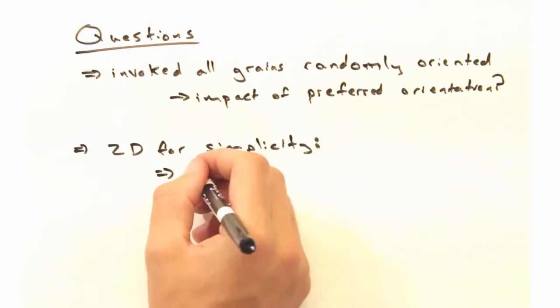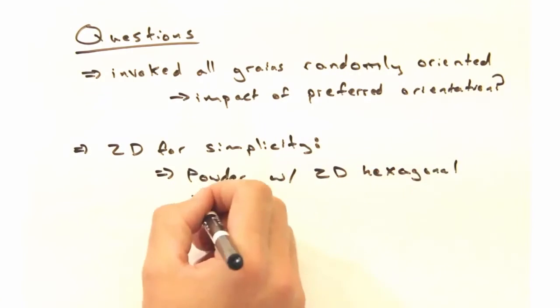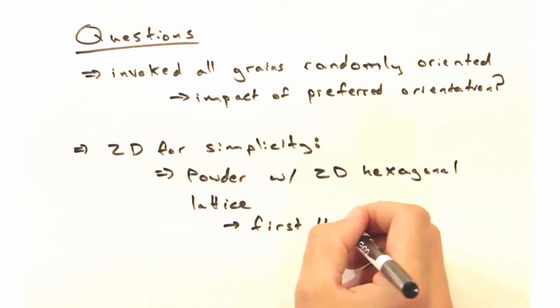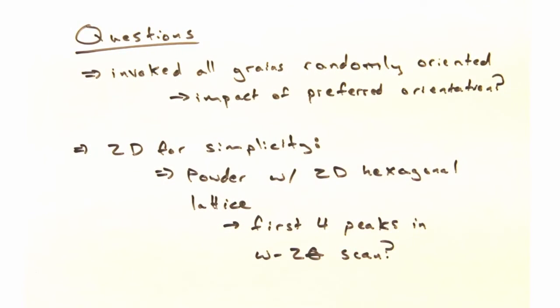Second, for a powder with a 2-D hexagonal crystal structure, can you identify the first four peaks to occur in an omega-2-theta scan?